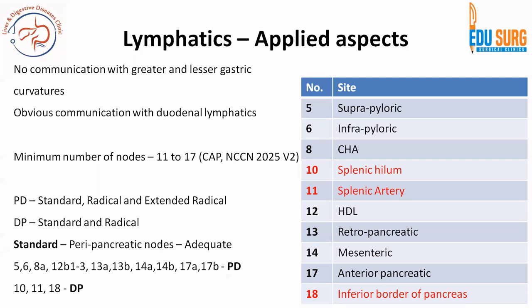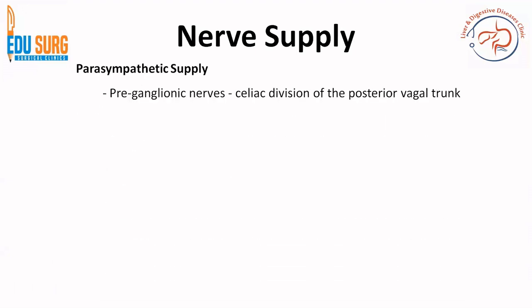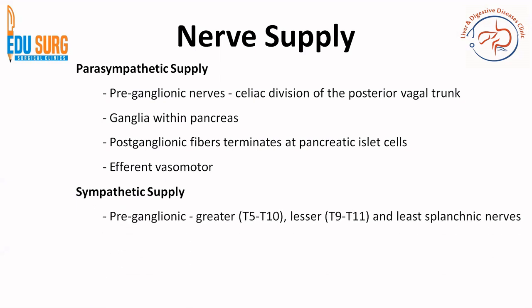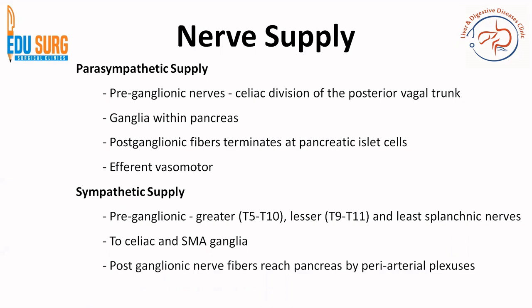A standard lymphadenectomy is the current recommended surgery when it comes to Whipple's procedure or a distal pancreatectomy. Coming to nerve supply — a very simplified topic. Pre-ganglionic parasympathetic nerves come from the celiac division of the posterior vagal trunk. Ganglia are within the pancreas and post-ganglionic fibers terminate at the pancreatic islet cells. The efferent from these is vasomotor. Sympathetic supply: pre-ganglionic comes from the splanchnic nerves, which is T5 to T10 / T9 to T11 — the greater and lesser splanchnic nerves — to celiac and superior mesenteric artery ganglia, and the post-ganglionic nerve fibers reach the pancreas by periarterial plexuses. We have seen these plexuses in some complex diagrams and we will see them in the next slide.